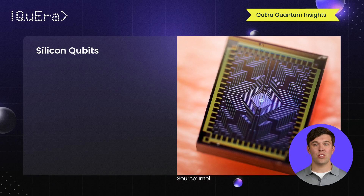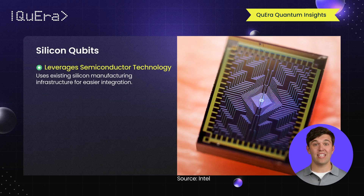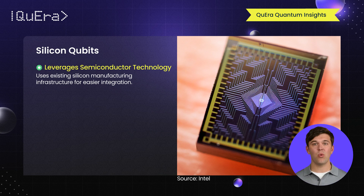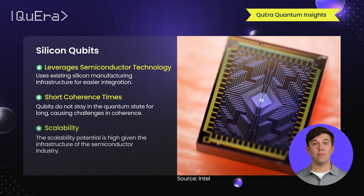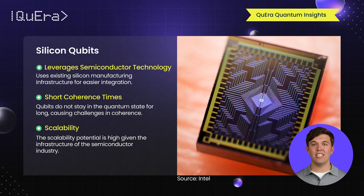Silicon-based quantum computing holds great promise because it leverages existing semiconductor manufacturing techniques. The idea is to use silicon spin qubits, which could eventually be integrated with classical computing components, potentially leading to more compact and commercially viable quantum processors. Silicon qubits are still in the research phase, with short coherence times being a significant challenge. However, the scalability potential is high, as it could piggyback on the well-established infrastructure of the semiconductor industry. Companies like Intel and DRAC are actively developing silicon quantum technologies.